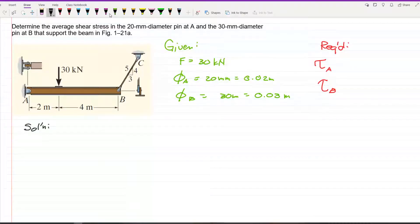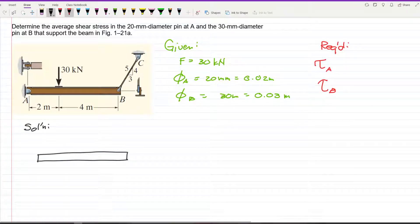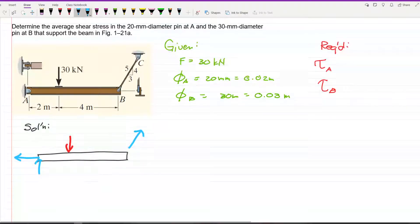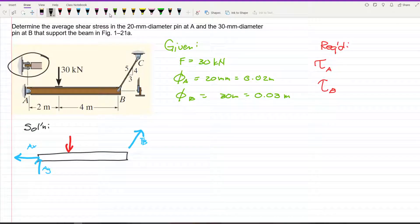Let's draw first the free body diagram. We have an applied force here, reaction at B and a reaction at A. Two reactions at A: A_x, A_y, and F_B. A is a double shear and B is single shear.